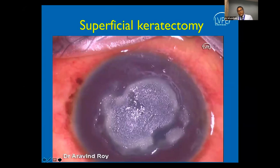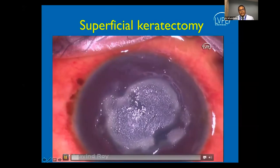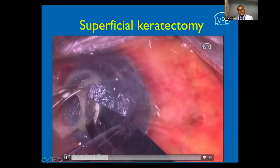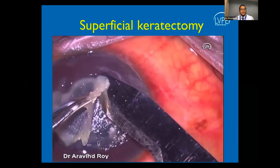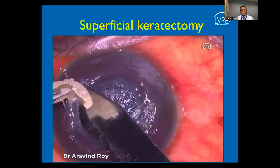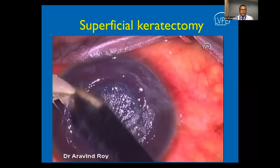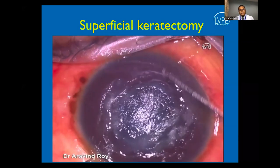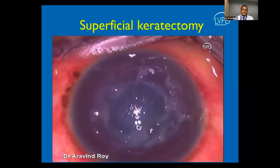Superficial keratectomy is another useful procedure in fungal keratitis, as fungi often grow as a plaque on the cornea. This acts as a debulking procedure, allowing drugs to penetrate and decreasing the fungal load, thereby helping in treating fungal keratitis.